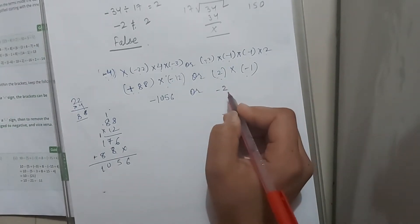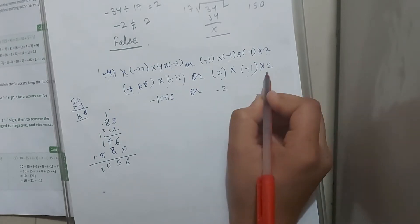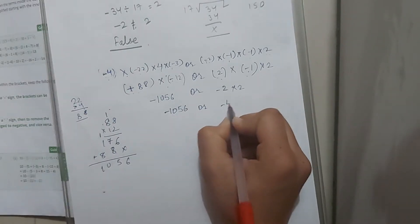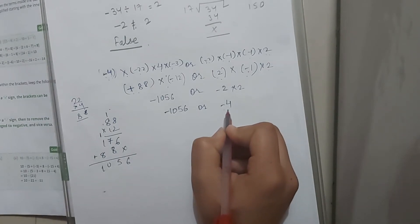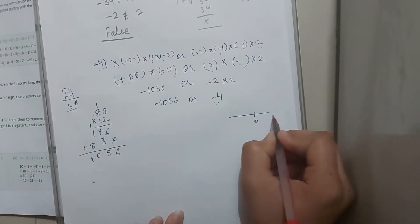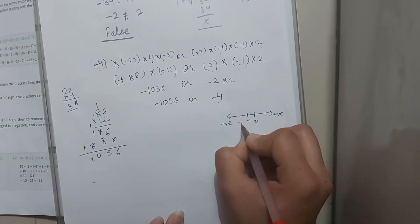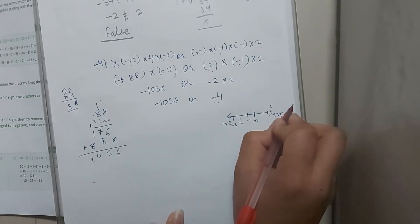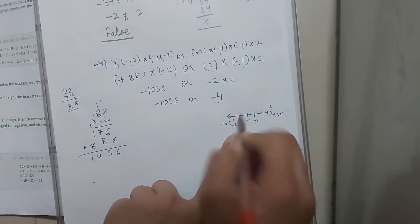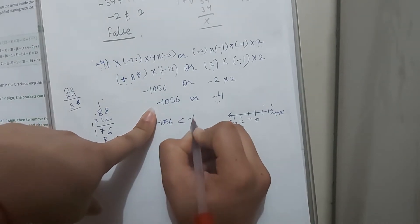When we multiply opposite signs, the result is also negative. Here it is minus 1 into 2, that is minus 2 multiply by 2. Here it is minus 1056 or minus 4. So, in negative terms, the term which is smaller in value is actually greater. Let me explain with a number line. This is our number line — here is 0, these are the positive numbers, and this is the negative side: minus 1, minus 2, minus 3, and so on up to positive 1, 2. So in the negative terms, if a term is smaller, it is greater than the previous term. Here, minus 1056 is smaller and minus 4 is greater.